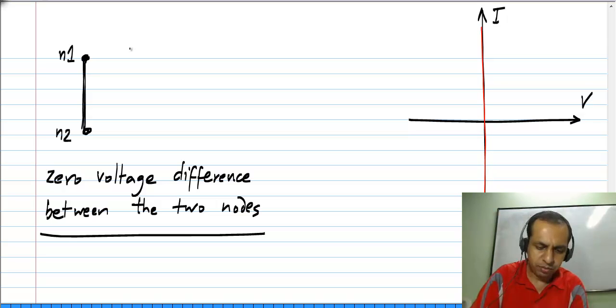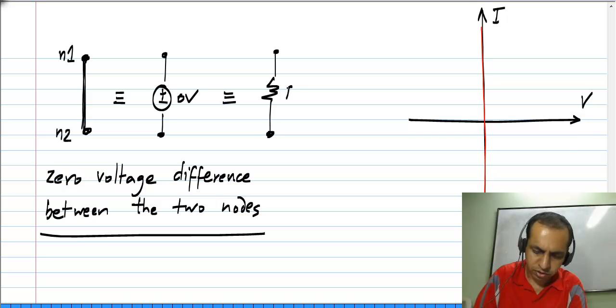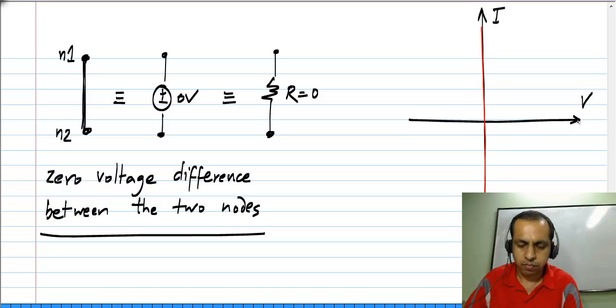From this, it is obvious that this can be represented as a voltage source of value 0, which is also equivalent to a resistance of value 0. These obviously, you know that if R is 0, then from V equals I R, V will always be equal to 0. These are all equivalent concepts to having a short circuit between these two nodes.